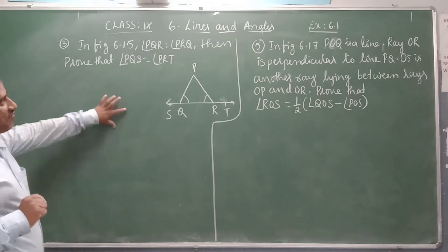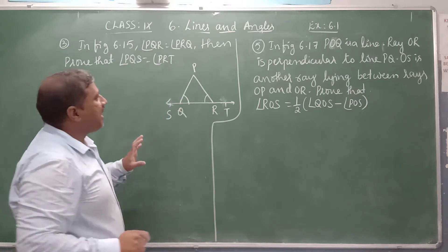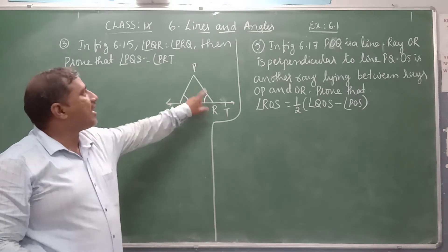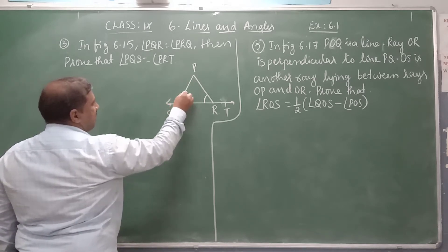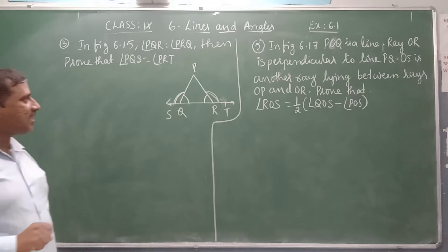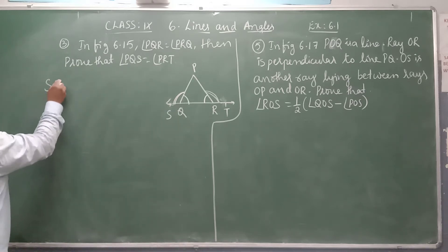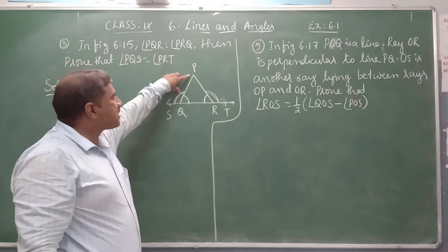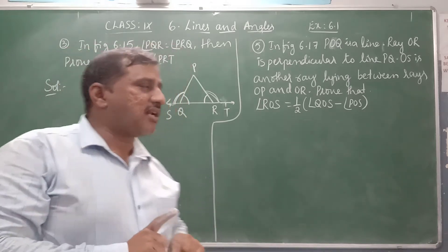Now we continue with Exercise 6.1, Question 3. In figure 6.15, angle PQR and angle PRQ are marked equally — the figure itself shows these two angles are equal. Prove that angle PQS equals angle PRT. On a straight line, two lines are drawn from point Q, and four angles are formed. The two internal angles are equal, and we need to prove the external angles are also equal.